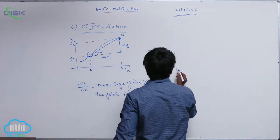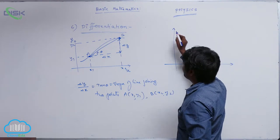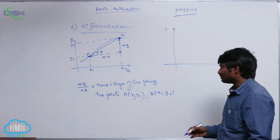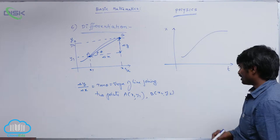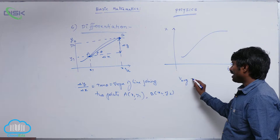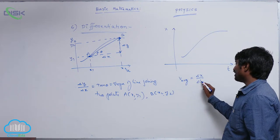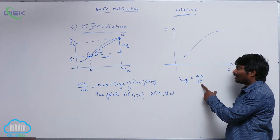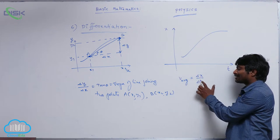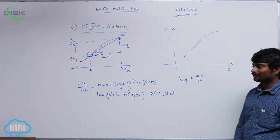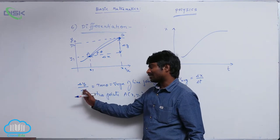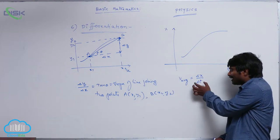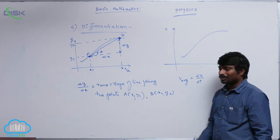Suppose a position-time graph is given — that is an x-t graph. The formula for average velocity is delta x by delta t, which is displacement divided by duration of time, or the average change of x with respect to t. Just as we called it average change of y with respect to x, here it is average change of x with respect to time, or displacement divided by duration of time. That gives you average velocity.